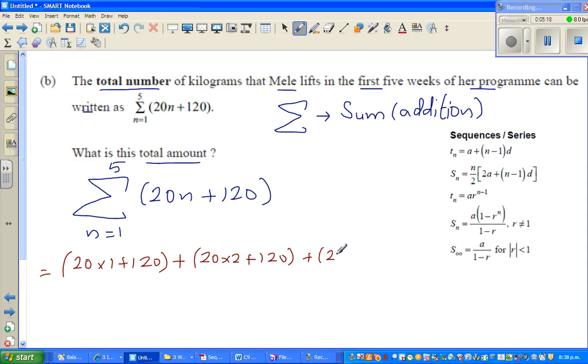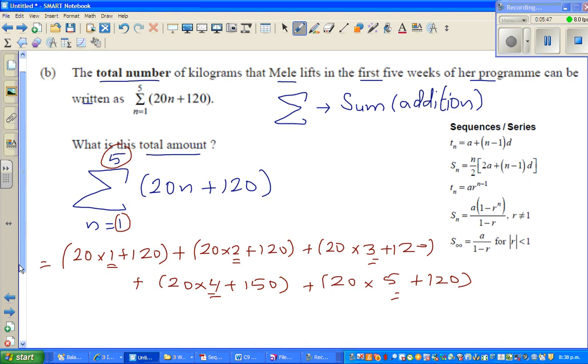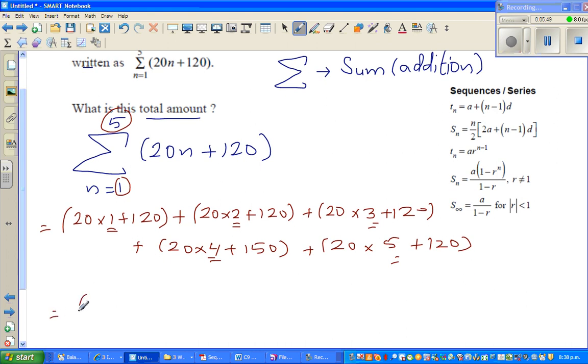And keep adding which is 20 times 3 plus 120. You have to keep going up to 5, plus 20 times 4 plus 120, plus 20 times 5 plus 120. You have to stop here because n is from 1 to 5. So can you see we've got from 1, 2, 3, 4, 5.